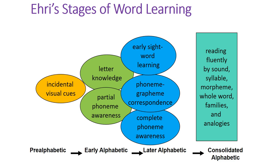Linnea Ehri took Jeanne Chall's work and added to it. You can see it's actually very similar — the same stages appear: pre-alphabetic, early alphabetic, later alphabetic. But Ehri explained them further. The pre-alphabetic stage she called incidental visual cues, because children in this stage are very visual and see words as pictures — they associate words with different things based purely on how the words look. In the early alphabetic stage, they become aware of individual letters, develop the ability to recognize and name letters, and phoneme awareness begins to build.